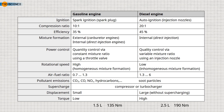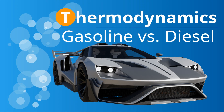However, the displacement and therefore the engine size of a diesel engine can be kept as small as that of a petrol engine with the same power output if the relatively small displacement is compensated for by appropriate turbocharging. Turbocharged engines can therefore be built significantly smaller than non-turbocharged engines with the same power output. I hope you enjoyed the video and found it helpful. Thanks for watching.